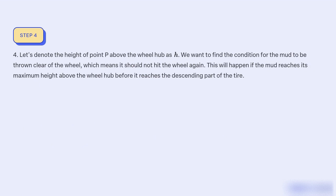4. Let's denote the height of point P above the wheel hub as h. We want to find the condition for the mud to be thrown clear of the wheel, which means it should not hit the wheel again. This will happen if the mud reaches its maximum height above the wheel hub before it reaches the descending part of the tyre.